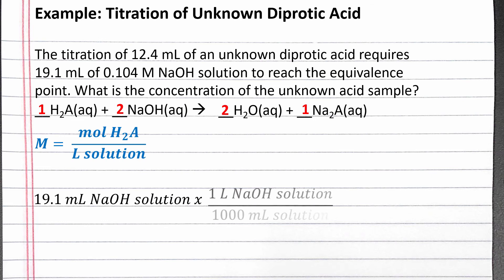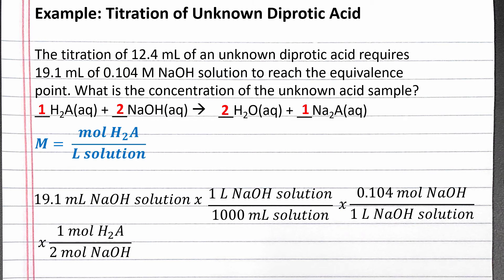First, let's convert from milliliters to liters. Then we can use the molarity of sodium hydroxide to convert from liters sodium hydroxide solution to moles of sodium hydroxide. Then we can convert from moles of sodium hydroxide to moles of H2A using the coefficients in the balanced chemical equation. We need 2 moles of NaOH for every 1 mole of H2A.